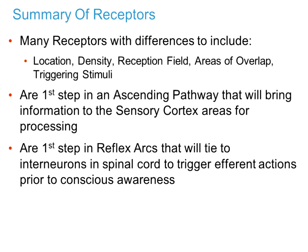These are our specialized receptors — lots of different receptors, a variety of locations, and lots of overlap. Because receptors can adapt differently and have small or large receptive fields, they can give you a lot of information and help you discern pressure, stimulus, and timing when you're holding something.